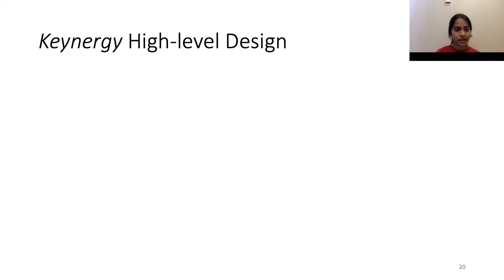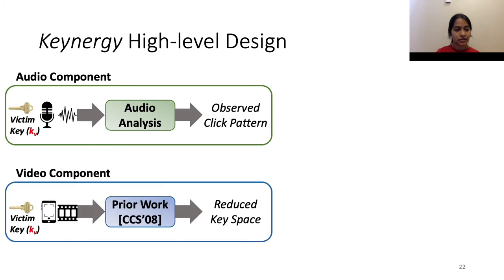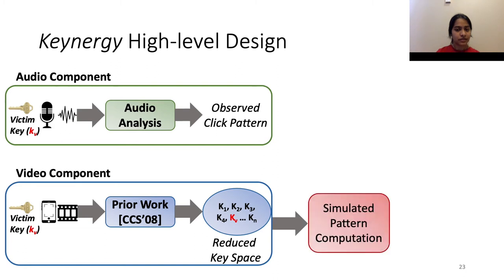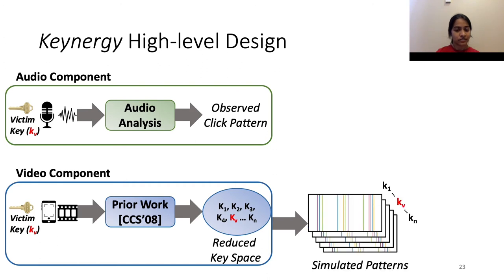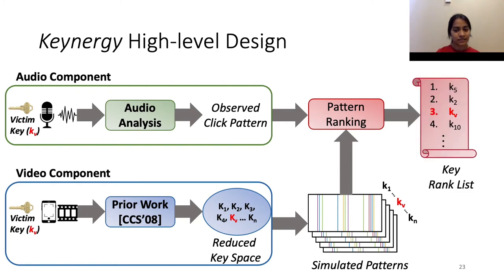Now that we are equipped with sufficient background, we describe the high-level design of Kinergy, which consists of the audio and video components. The audio component takes as input the key insertion audio of the victim key, performs audio analysis to output an observed click pattern. The video component takes as input blurry visuals of key insertions, applies prior work to output a reduced key space. This reduced space contains the victim key with high probability. We then utilize the simulated pattern computation module to convert this key pool to a set of simulated patterns. Finally, we have a pattern ranking module that ranks these keys K1 to KN depending on the similarity between their simulated patterns and the observed click pattern, converting this reduced key space to a ranked key list. In this example, we see that the victim key takes a rank of three.